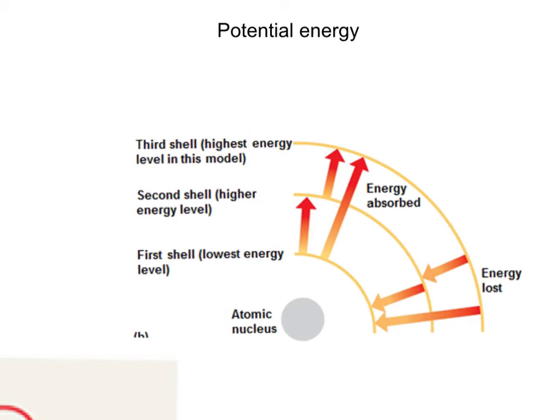Potential energy is the energy something has based on its location and structure — we often think about gravitational potential energy, how high something is and its ability to fall as it releases energy. Very important to us is electrical potential energy, which is based upon the separation of charge. This will be especially important when we talk about respiration and photosynthesis.